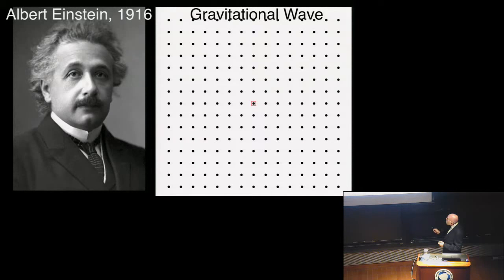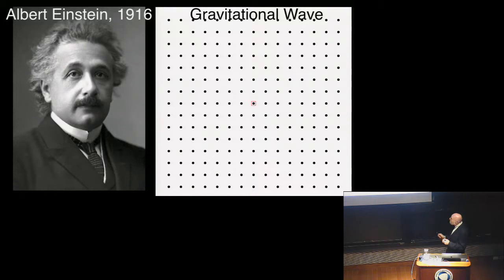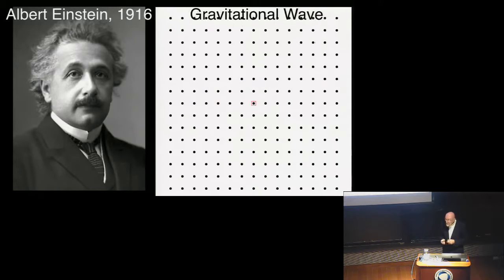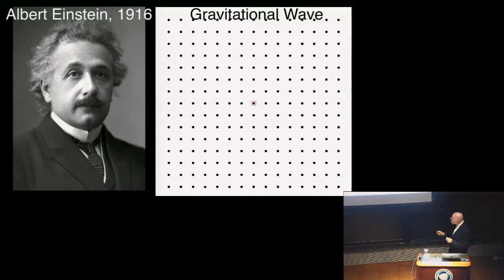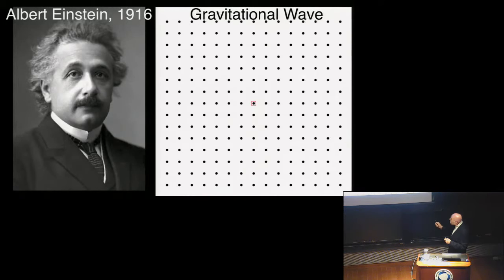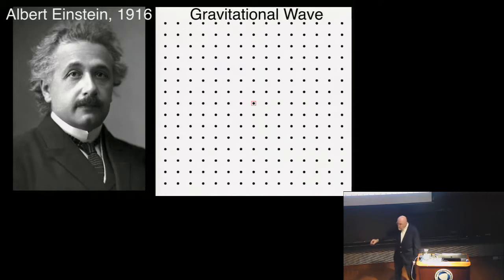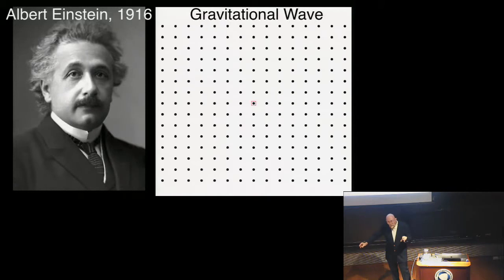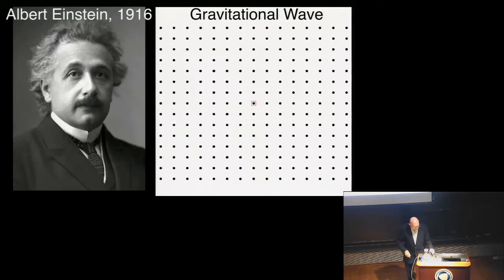Einstein said: if you are out in space and lay out a grid of particles freely floating — at rest with respect to each other — they should always remain at rest with respect to each other. But that's not what happens. When a gravitational wave comes by, propagating through this array of particles, it stretches and squeezes them: stretching space along one direction, squeezing along the other, in an oscillatory stretch and squeeze. More precisely, inertial reference frames are pushed back and forth relative to each other — something that would never happen in Newton's or Galileo's descriptions, but does happen according to Einstein.